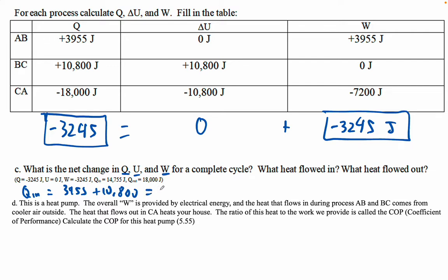That's 14,755. So that's the total heat that flowed in. The total heat that flowed out is 18,000 joules.